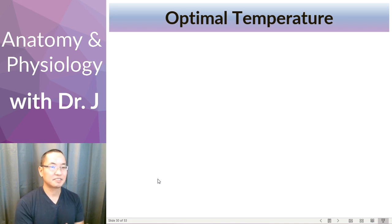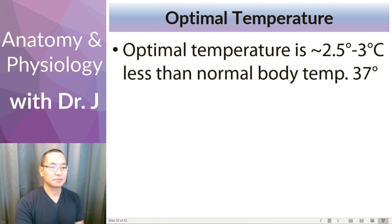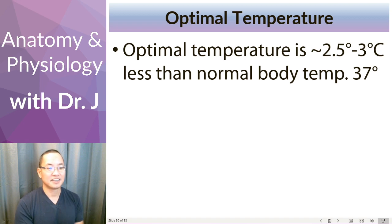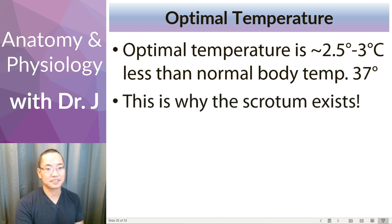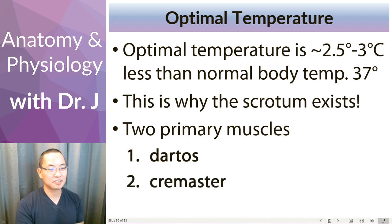The scrotum helps to cool off the testes so that sperm can develop in the seminiferous tubules and become healthy and motile. The optimal temperature for sperm development is actually a little less than normal body temperature — this is why the testes are outside of the body and contained within the scrotum. There are two primary muscles that can move the scrotum: the dartos and the cremaster. Other muscles can help, but these are the two main movers.